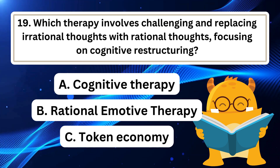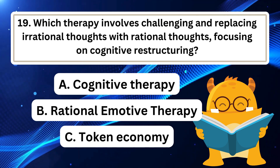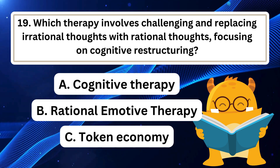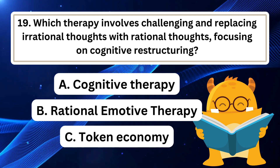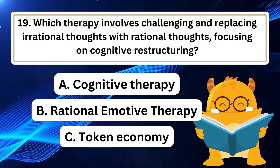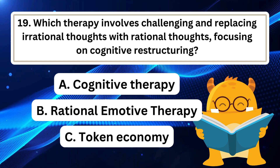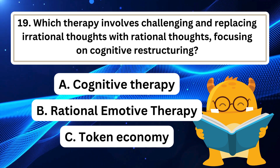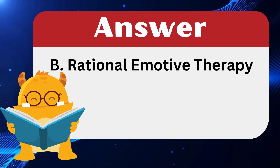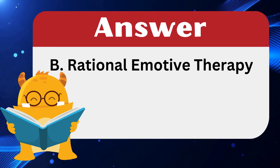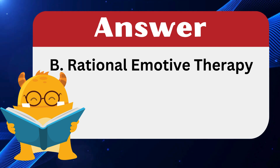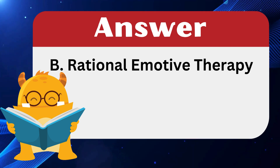Question 19: Which therapy involves challenging and replacing irrational thoughts with rational thoughts, focusing on cognitive restructuring? The answer is B: Rational Emotive Therapy. Rational Emotive Therapy, developed by Ellis, emphasizes cognitive restructuring by replacing irrational thoughts with rational ones.